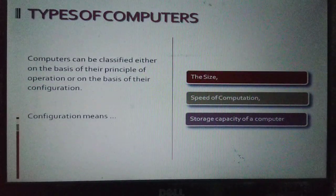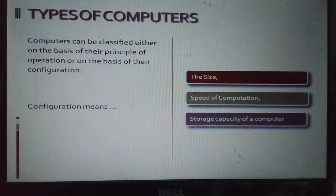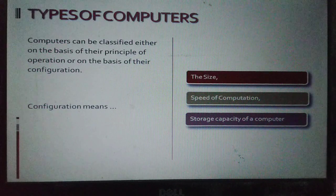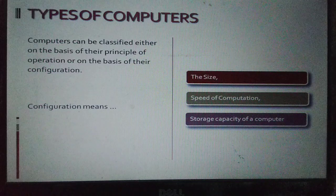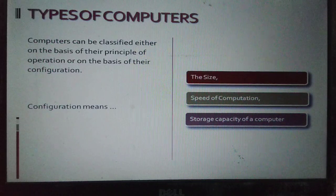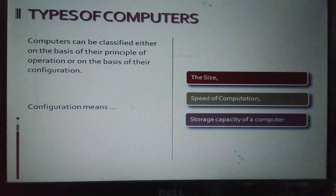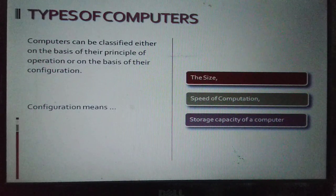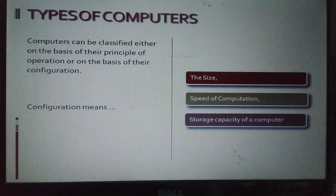Types of Computers. Computers can be classified either on the basis of their principle of operation, that means function, or on the basis of their configuration. Configuration means the size, speed of computation and calculation, and storage capacity of a computer.